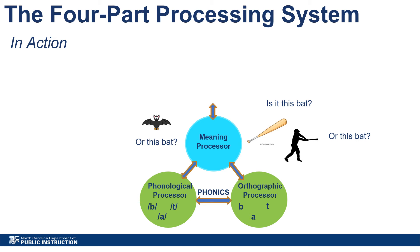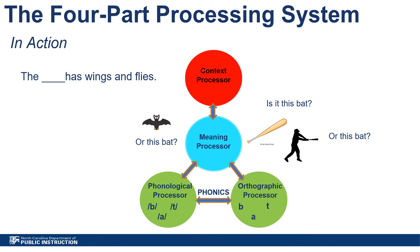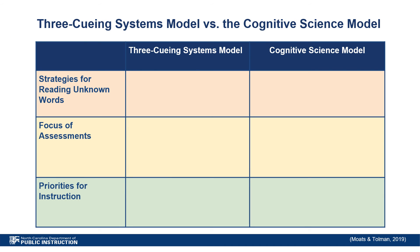Or could it be referencing the animal? Finally, the context processor helps the student establish additional meaning through the context in which the word appears structurally in the sentence as well as what is happening in the text being read. In this instance, the story is about animals that are mammals, so the context for the meaning of the word bat is set as the animal bat. The context processor is at the top of this model — it is the last stop, as its only job is to interact with and support the meaning processor. The four-part processing system model is based on the cognitive science of how the brain reads.